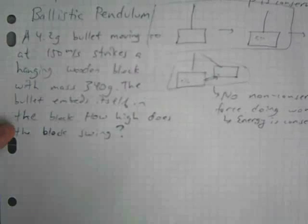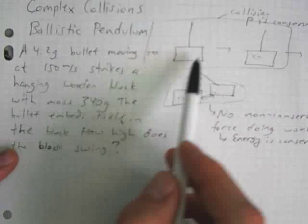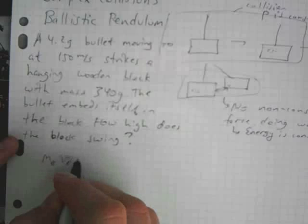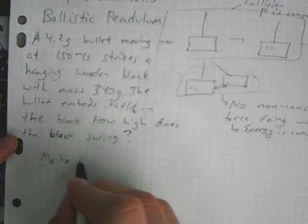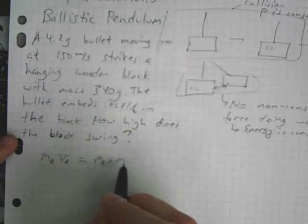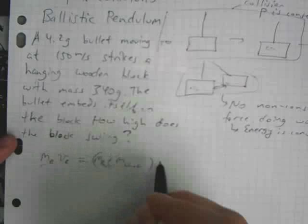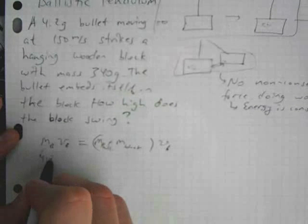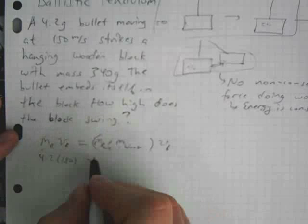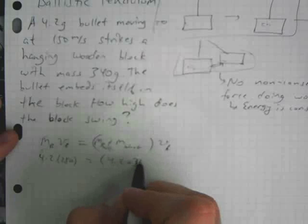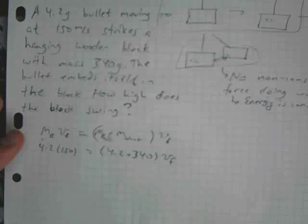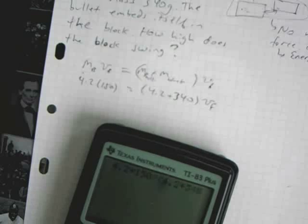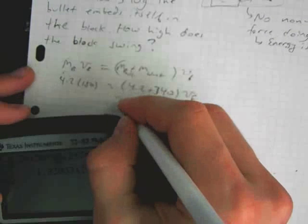As I said, for the bullet hitting the block, momentum is conserved for this first part. So, for the first part, we have mass of the bullet times velocity of the bullet. And that's all the initial momentum we have. And after the collision, we have the bullet and the block moving together at some speed. So, this is our equation for the first part. And then we can punch in our numbers. We've got a 4.2-gram bullet, 150 meters per second. And then we've got mass of the bullet is 4.2 plus mass of the block, 340. By punching that in, we've got 4.2 times 150 divided by 4.2 plus 340. So, the velocity of the block and bullet together is 1.83.